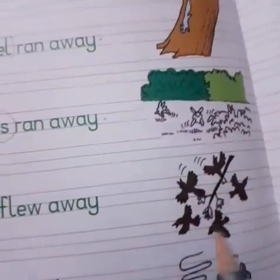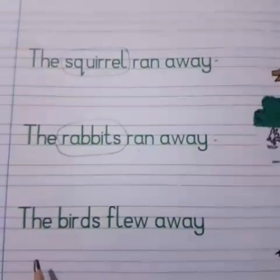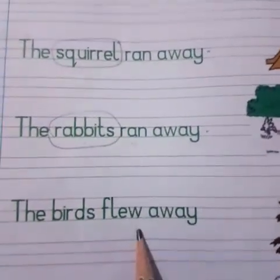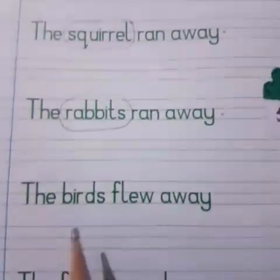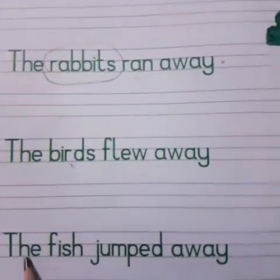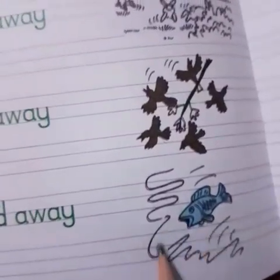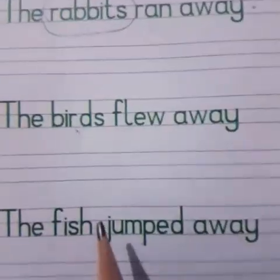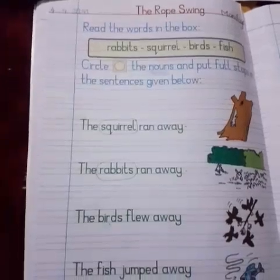Then the next one: 'The birds flew away.' Find out the noun — birds. And then: 'The fish jumped away.' Yes, fish is the noun here. Circle it and put a full stop.